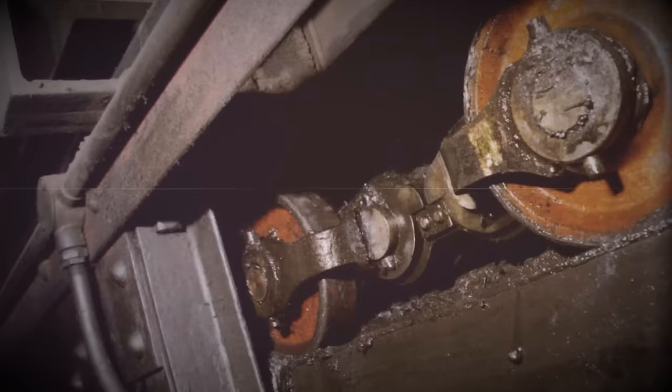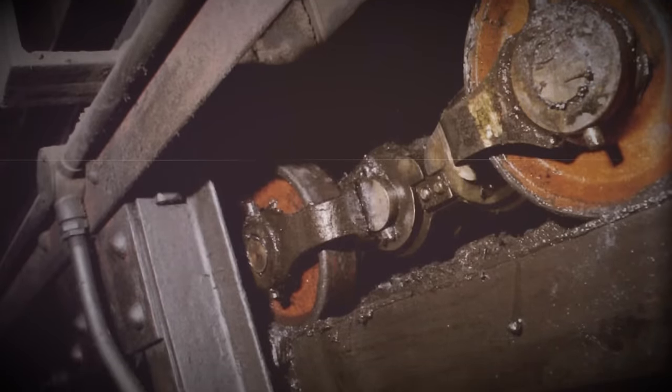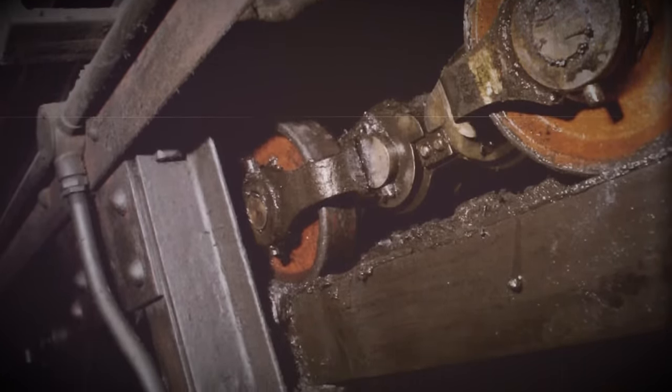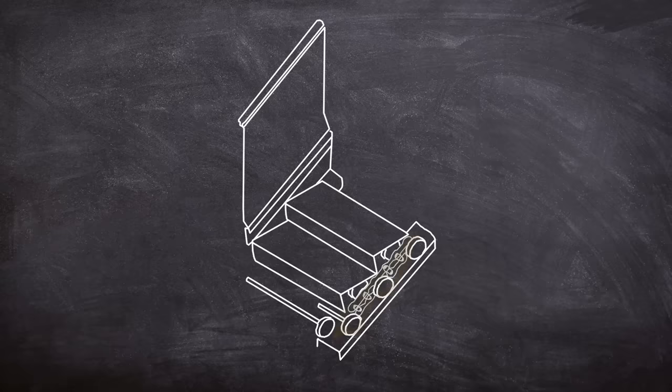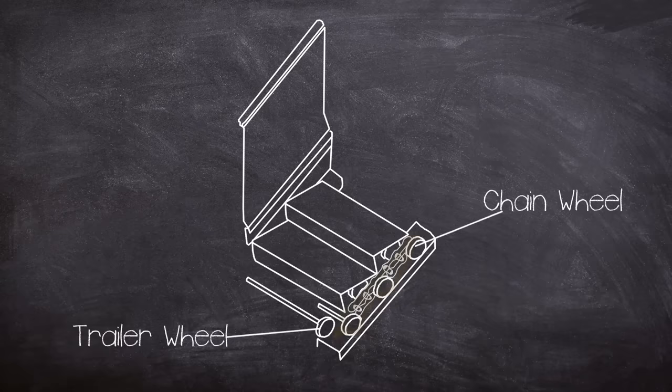There are two pairs of wheels for each step on the escalator, each running on a track. One pair of these wheels, the chain wheels, run outside and the other, called the trailer wheels, run on the inside of the track.